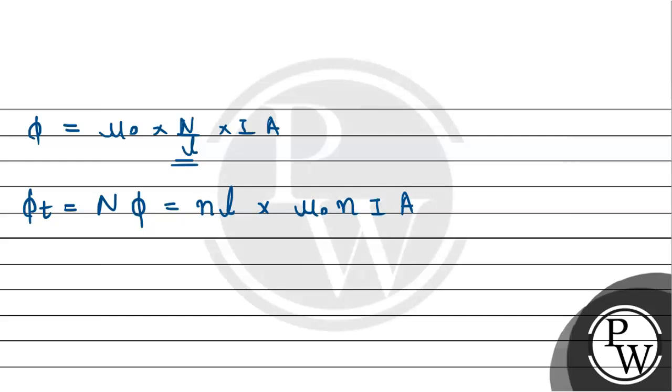N times N will be N square. Therefore, we will get the total flux through the N number of turns will be mu0 into N square times L times A into the current I.